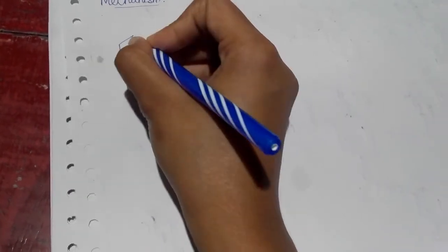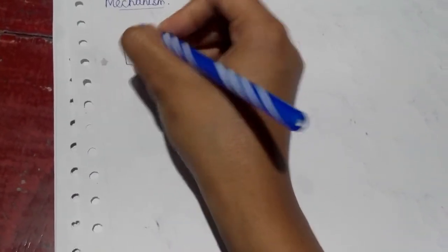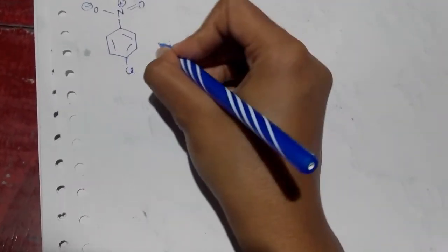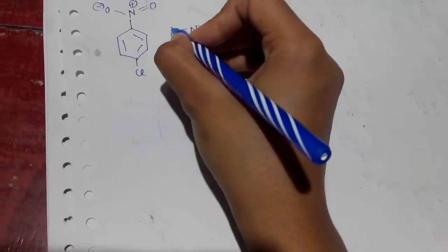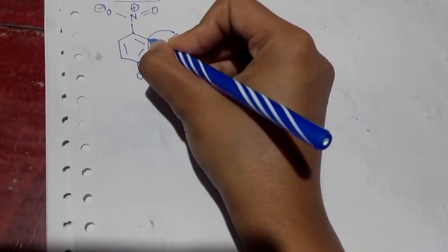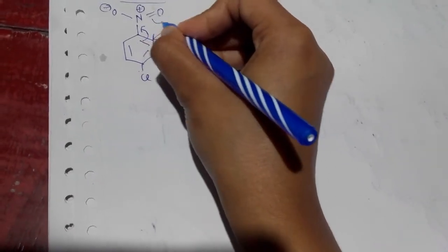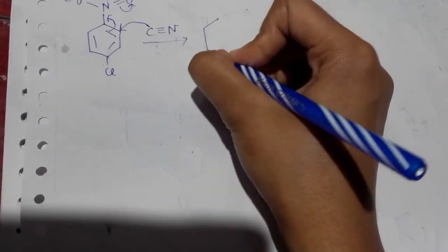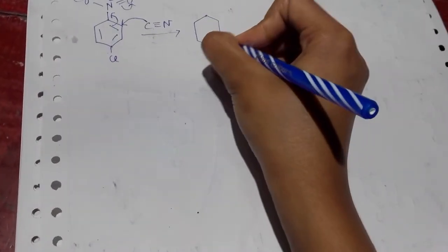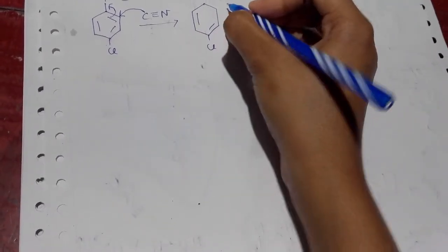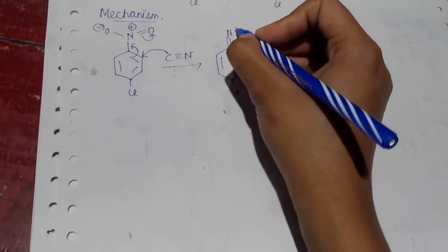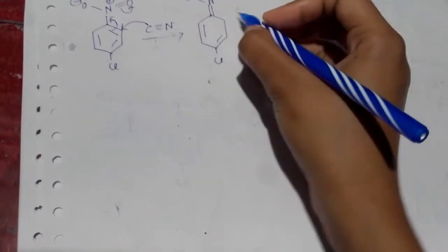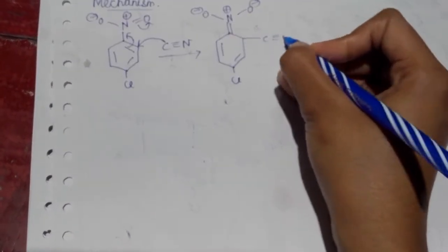For the mechanism, I can write the nitro group like this — this is another way of writing NO2. The cyanide, that is potassium cyanide — this cyanide will go and attack here, this bond will break and shift like this. This bond breaks and shifts over there. Next, we get this double bond, and there is a negative and a positive charge like this, and the cyanide got attached.